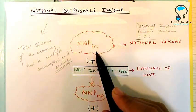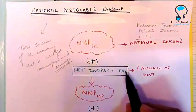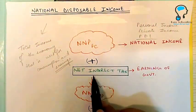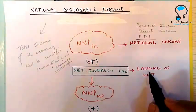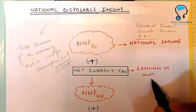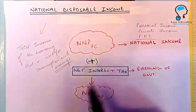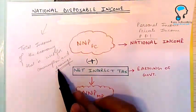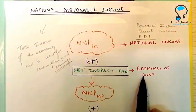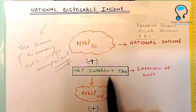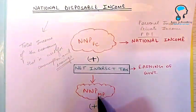In the national income which you have calculated by any of the three methods, you have to add net indirect taxes. Net indirect taxes are the earnings of the government, and that earning can also be used for consumption and saving by the economy.